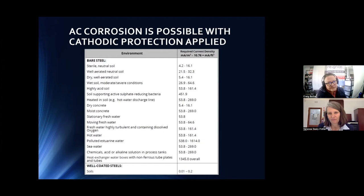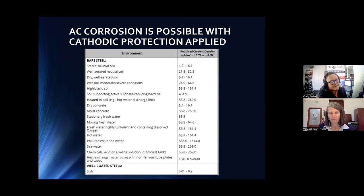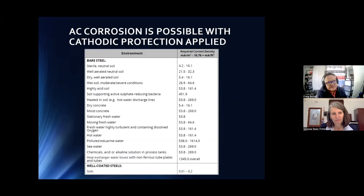This slide comes out of the NACE CP4 manual. The right column gives an indication of the bare exposed steel — like little defects we're talking about. If applying cathodic protection under different environments, this is given as a guideline. For well-aerated neutral soil with bare steel, you would technically apply between 21.5 and 32.3 milliamps per square meter — a relatively small current applied per square meter of bare steel.